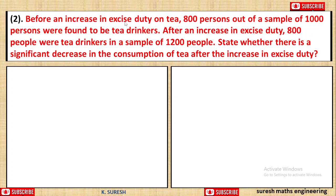Before the excise duty increase, out of 1000 persons, 800 persons were tea drinkers. After the tax increase in excise duty, 1200 people were sampled and 800 persons were tea drinkers. We need to check for a significant decrease after the excise duty increase.